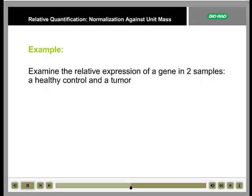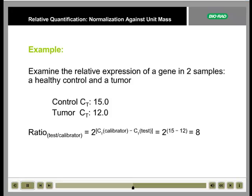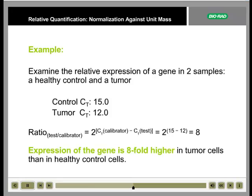Here is an example examining the relative expression of a gene in a healthy control sample and in a tumor sample. The control yielded a CT of 15, and the tumor a CT of 12. Using these values with the equation we derived on the previous slide, we find that the expression of this gene is 8-fold higher in the tumor cells than in the healthy control cells.